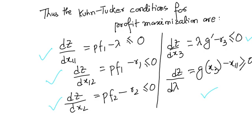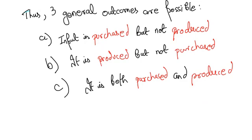dz/d(lambda) equals g(x3) minus x11. Note all the conditions except the last one are less than or equal to zero, whereas for the last condition, the differentiation of the Lagrangian function with the Lagrangian multiplier is always greater than or equal to zero. Thus there are generally three general outcomes: the input is purchased but not produced, it is produced but not purchased, and thirdly it is both purchased and produced.